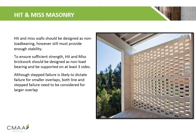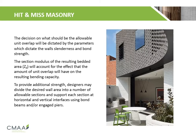It is common practice to design hit-and-miss walls as non-load bearing; however, they still must provide enough stability for other loads such as wind loads. They must be supported on at least three sides. Both stepped and line failure need to be considered for both small and larger overlaps. The allowable unit overlap is affected by parameters which also affect wall slenderness and bond strength. The section modulus of the resulting bedded area accounts for the effect that the amount of unit overlap has on bending capacity. To provide additional strength, designers divide the desired wall area into smaller sections, supporting each section at horizontal and vertical interfaces using bond beams or engaged piers.